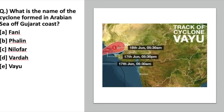What is the name of the cyclone formed in the Arabian Sea off the Gujarat coast? Kind of tragic but also miraculous news. The five options are Fanny, Fallon, Nilofa, Varda, and Vayu. Option E — Vayu — is correct, as you can see in the picture. Vayu is the cyclone formed in the Arabian Sea off the Gujarat coast. It is miraculous because Vayu could have caused huge destruction in Gujarat, but fortunately it lowered to a depression and caused rainfall in various districts of Gujarat, relieving the region of heat.